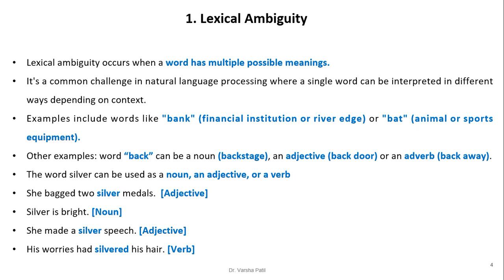Now we will see each level in detail. First is lexical ambiguity. Lexical ambiguity occurs when a word has multiple possible meanings. It is a common challenge in NLP where a single word can be interpreted in different ways depending on context. For example, 'bank' may be a financial institution or river bank; 'bat' may be an animal or sports equipment.